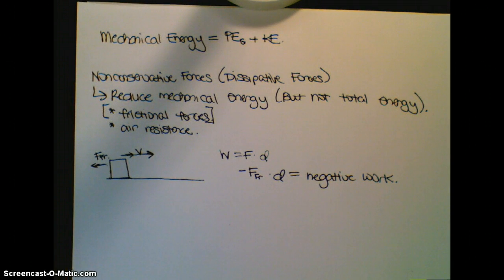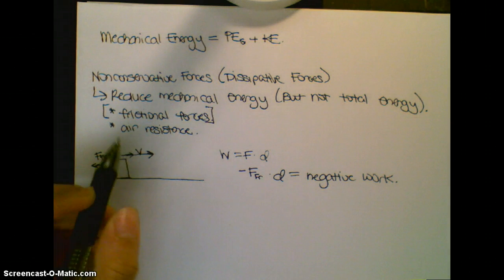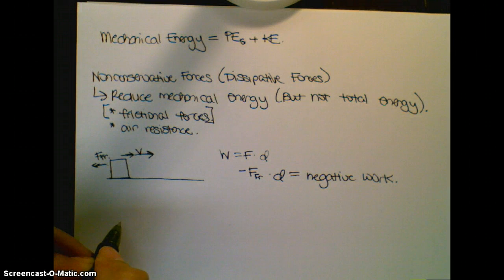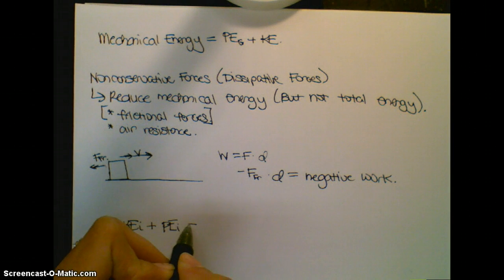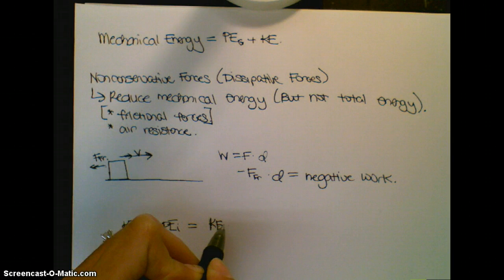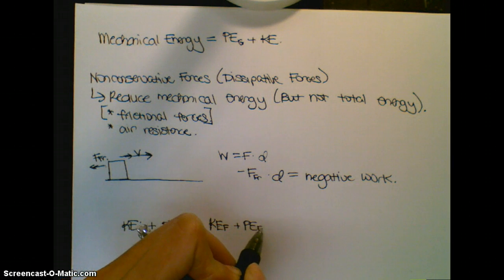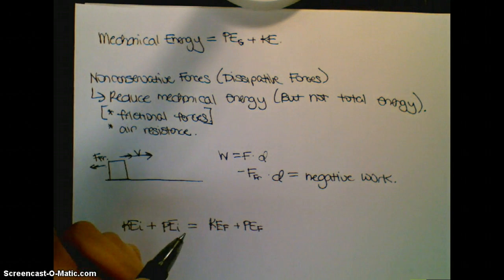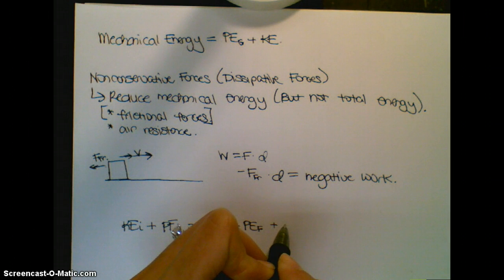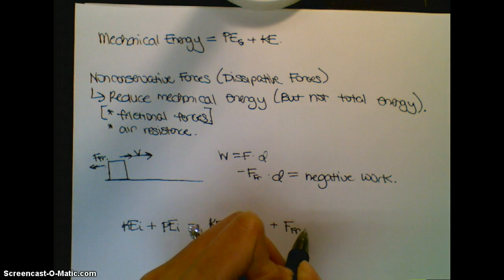So what does this mean? How do I put this in a formula? So, the formula we have, we know that we have our mechanical energy. We have our kinetic energy initial plus our potential energy initial, and we know this is equal to our kinetic energy final plus our potential energy final. But, if we're including friction in this situation, we have to include our force of friction times our displacement.